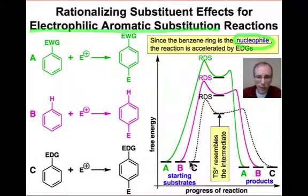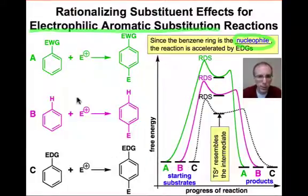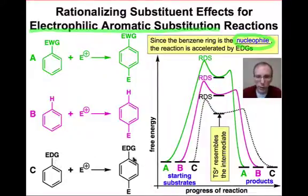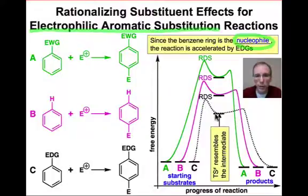The reaction coordinate diagrams look like this, starting from the starting substrates in which there's either an electron withdrawing group, a hydrogen atom, or an electron donating group on the ring. We see that we'll pass through the rate-determining step — the highest point in the reaction energy profile — head to that positively charged intermediate, and then undergo electrophile dissociation onto products.